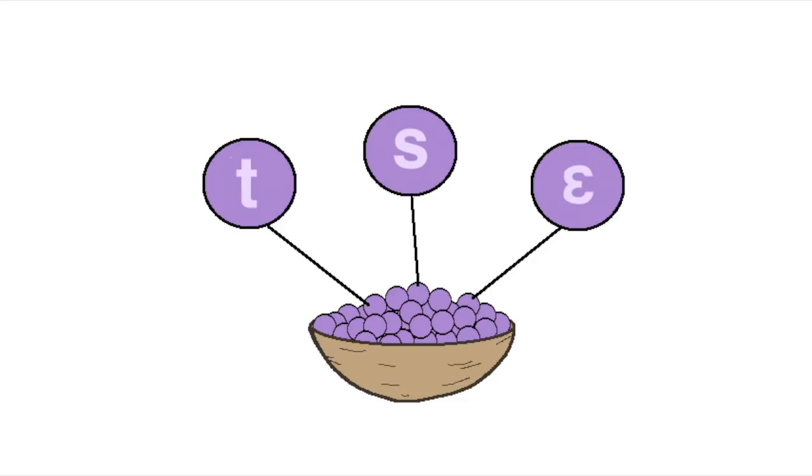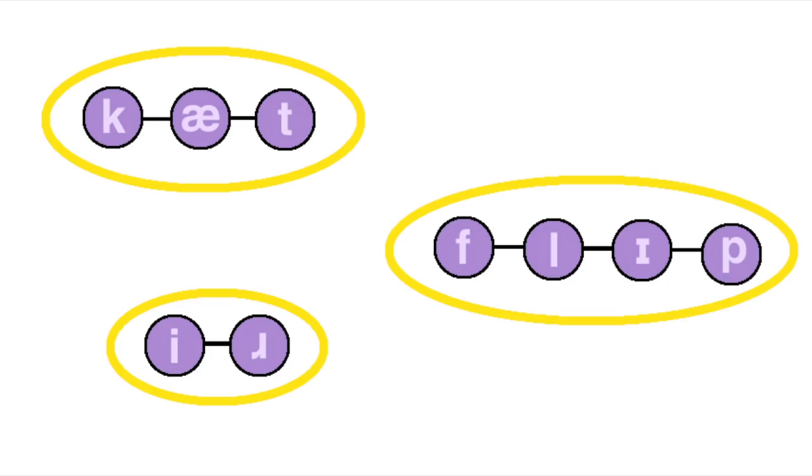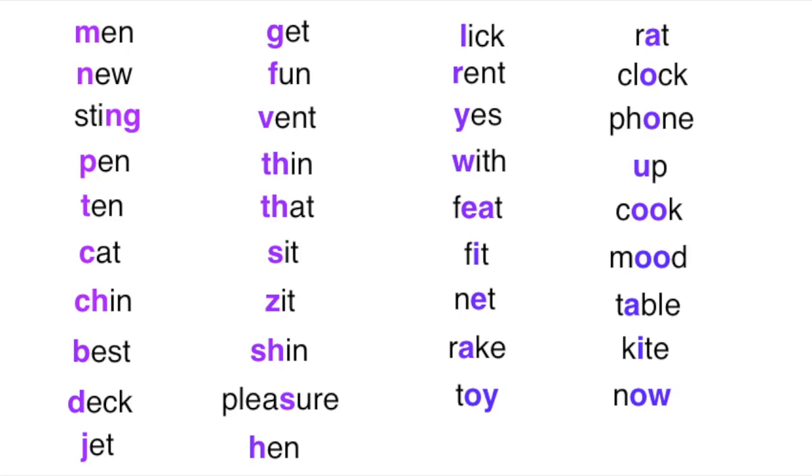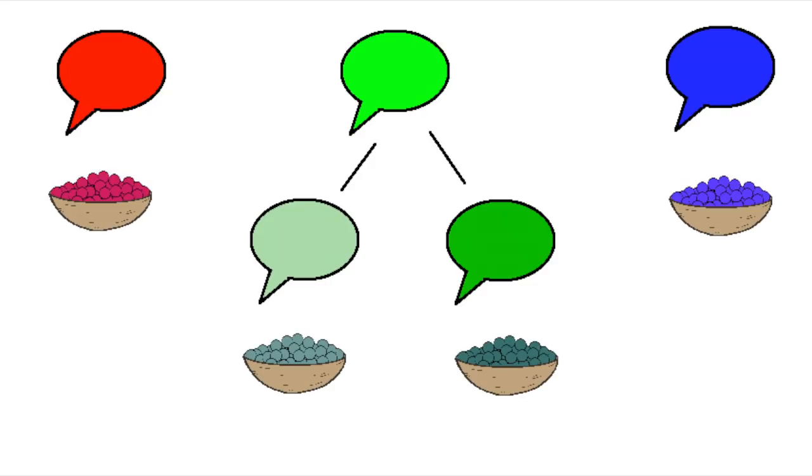Phoneme inventory refers to the set of possible sounds, or phonemes, that a language has available to build words out of. My dialect of English has about 38, assuming I count it right, but different languages and even different dialects of the same language will have different inventories.